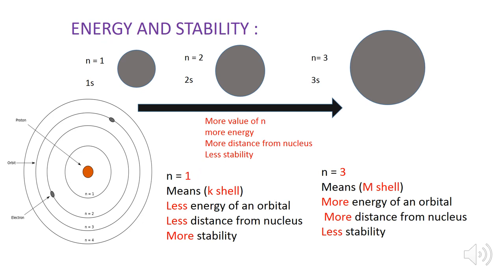The principal quantum number also tells us about the energy of an orbital, its distance from the nucleus, and its stability. When n equals one — the K shell — it has less energy because its distance from the nucleus is very small, and as a result it is more stable compared to other orbitals. When we go farther from the nucleus, the atomic orbital size increases. When n equals three — the M shell — its size is bigger, so its energy is more because the distance from the nucleus is greater, resulting in decreased stability.